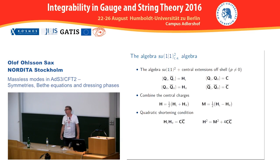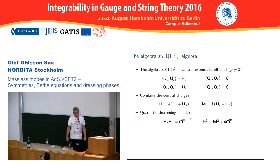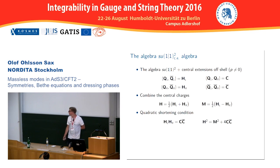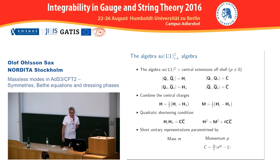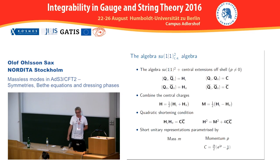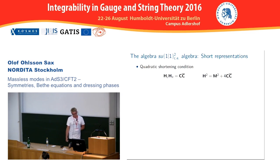In this algebra there's a quadratic shortening condition: H_left × H_right = C^2, or equivalently H^2 = M^2 + C·C-bar. A short unitary representation is parameterized by two parameters: the mass and the momentum, where the momentum is related to the central charge C by e^{ip} - 1 times some normalization constant. The short representations satisfy this shortening condition.